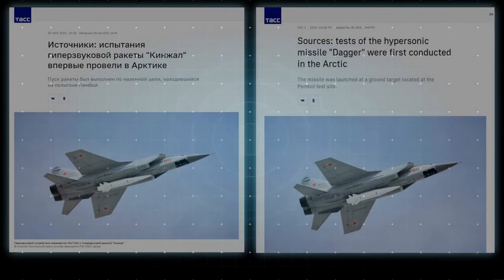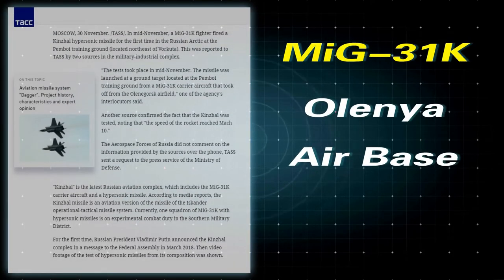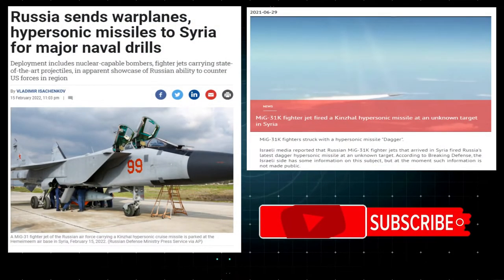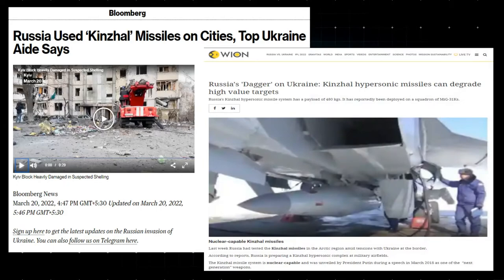According to Russian media TASS, the first Kinzhal missile was launched in the Arctic in mid-November 2019. According to reports, the launch was carried out by a MiG-31K from the Olenya Air Base. A Kinzhal missile was also launched on a ground target in Syria by a MiG-31K in June 2021. On February 20, 2022, Russia fires a hypersonic missile at an armored depot and then fires another hypersonic missile destroying a large fuel storage site on the country's south.